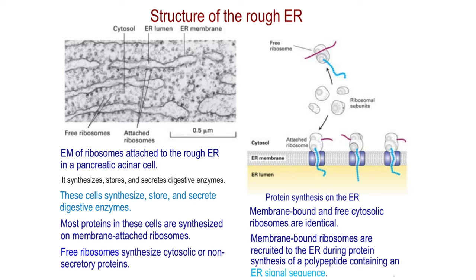When messenger RNA leaves the nucleus and goes into the cytosol, if you think it randomly attaches to a ribosome on the surface of the endoplasmic reticulum or to a ribosome in the cytosol — this is not true. The free large and small subunits present in the cytosol assemble around messenger RNA and start producing polypeptide. When the first 15 to 30 amino acids are made, this specifies the fate of the polypeptide.